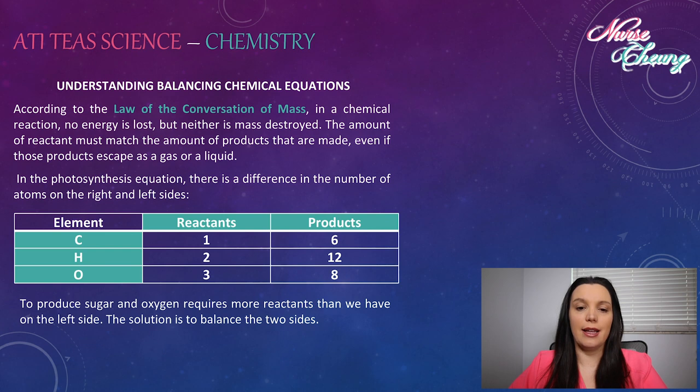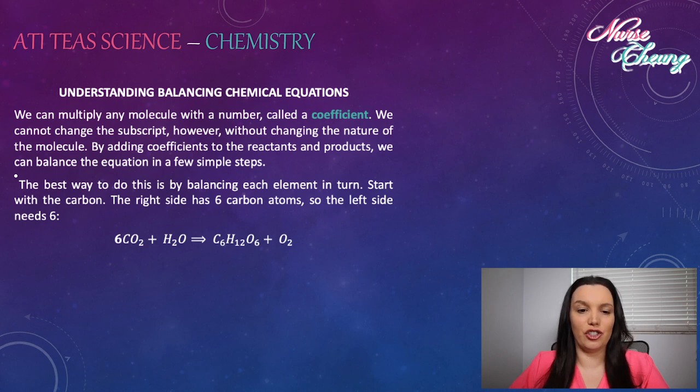According to the law of conservation of mass, in a chemical reaction no energy is lost, but neither is mass destroyed. The amount of reactant must match the amount of product that they are made of, even if those products escape as a gas or liquid. In the photosynthesis equation, there is a difference in the number of atoms on the right and left sides. To produce sugar, oxygen requires more reactants than we have on the left side. The solution is to balance on both sides. We can multiply any molecule with a number called a coefficient. We cannot change the subscript, however, without changing the nature of that molecule. By adding coefficients to the reactants and products, we can balance the equation in a few simple steps. The best way to do this is by balancing each element in turn, starting with carbon.